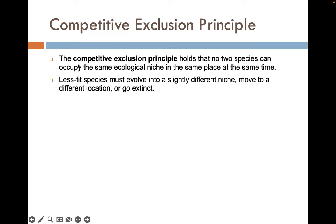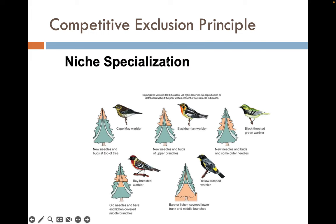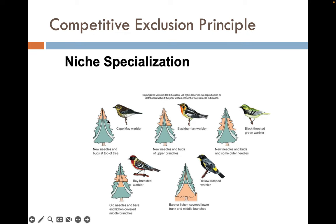The competitive exclusion principle has led to some really interesting speciation events, such as with warblers. All five species of warbler nest in pine trees in Michigan, coming back from the Bahamas or Mexico where they overwinter — usually showing up in March or April. Because they can't occupy the same niche at the same place and time, they've divided the pine trees into different locations.